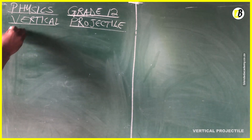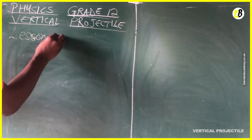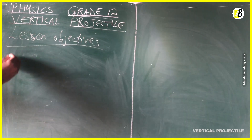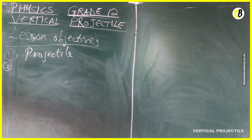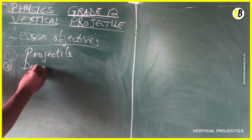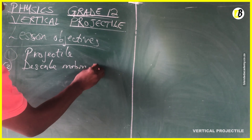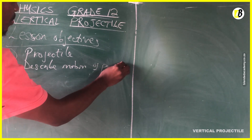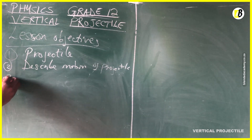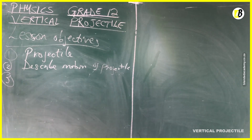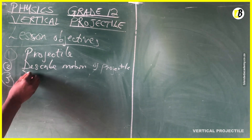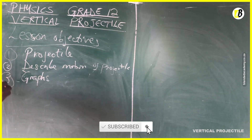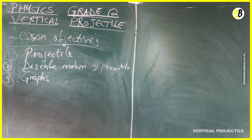So the lesson objectives are: first, define what a projectile is; second, describe the motion of a projectile; and third, draw and interpret graphs of the rate of change in position, rate of change in velocity, and understand all the various graphs associated with vertical projectile motion.